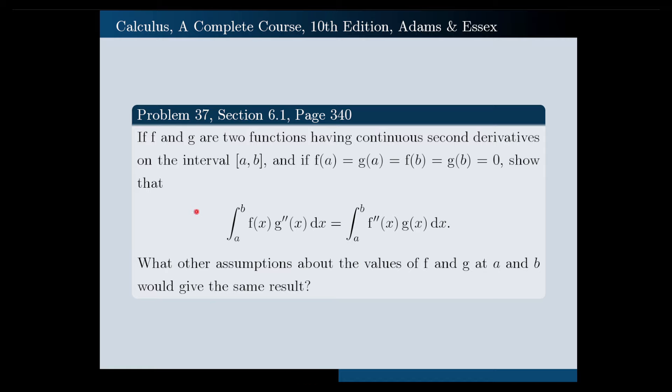Let us read the problem together first. If f and g are two functions having continuous second derivatives on the interval [a,b], closed interval a to b,